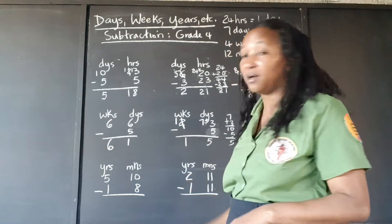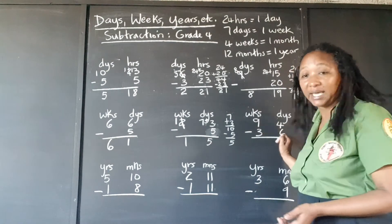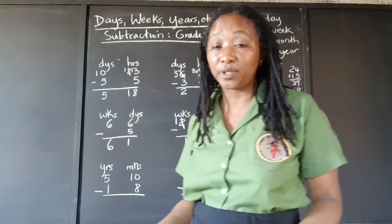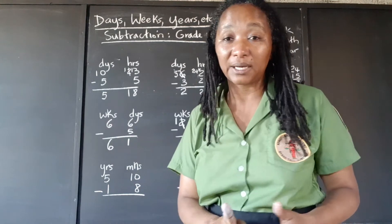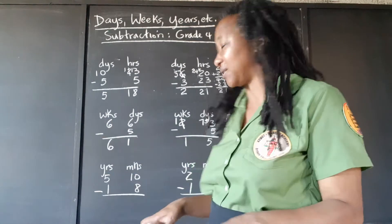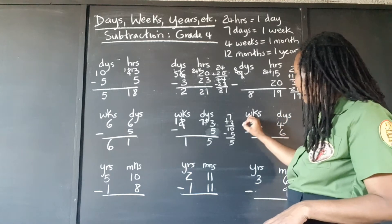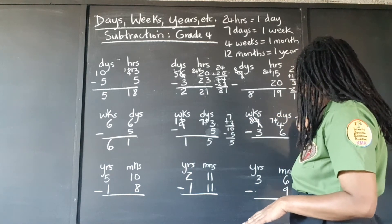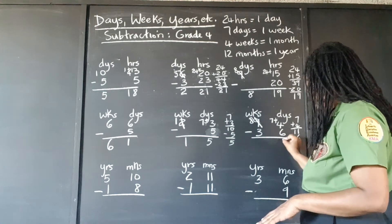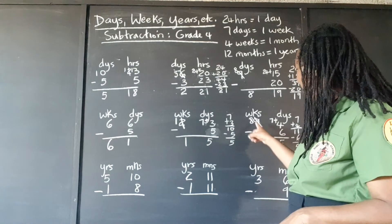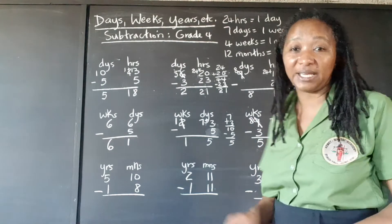Now we can bring down our 1 week. You're getting the knack of it, right? So here, we're taking 6 days from 4 days — we won't be able to do that unless we go and get a batch of days. We go for 1 week and spread it into 7 days. Taking 1 from the 9 weeks and carrying that 1 week as 7 days, so now we have 7 plus 4 equals 11. Take away 6 and we're left with 5 days. 8 take away 3 is also 5. So it's 5 weeks and 5 days.